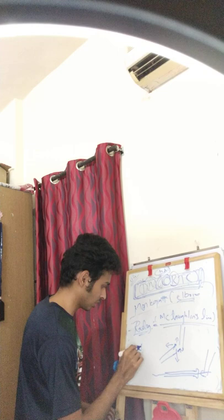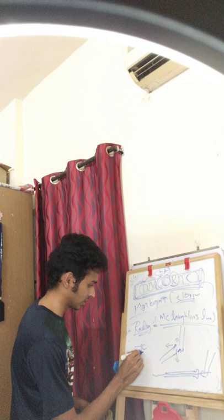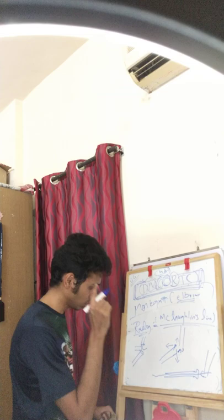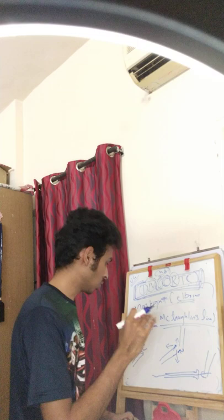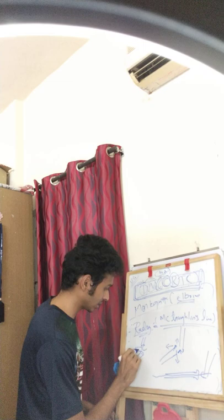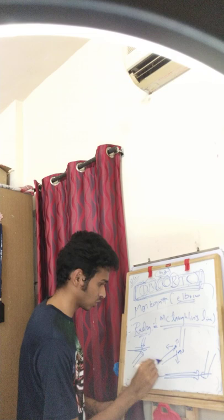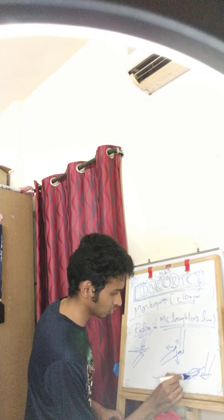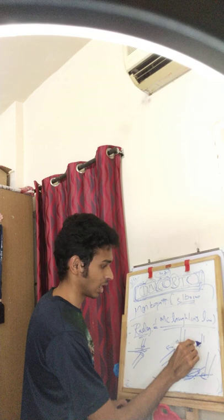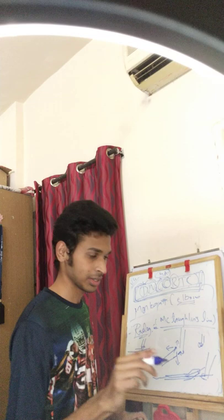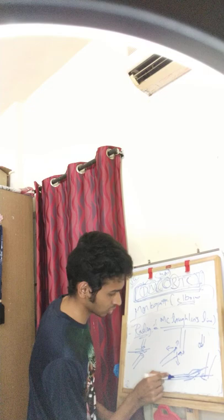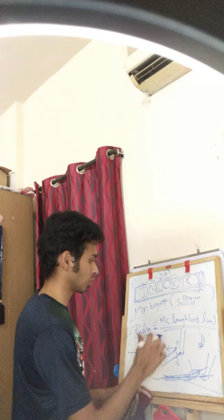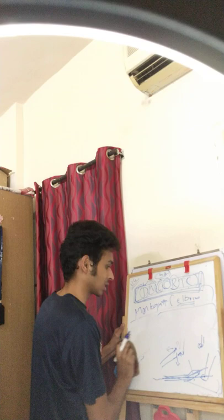No matter whether the elbow is straight, flexed, or hyperflexed, the line through the center of the radius must pass through the center of the capitulum. When there is dislocation — for example, anterior dislocation — the radius shifts anteriorly, so McLaughlin's line goes upward and does not pass through the capitulum. Posterior dislocation causes it to go downward, lateral dislocation causes it to go laterally. Remember: the head of the radius articulates with the capitulum of the humerus, while the ulna articulates with the trochlea.